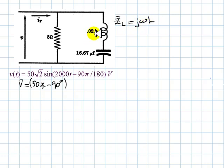L is 20 mH, but who is omega? Omega is given by the source: 2000 radians per second. 2000 radians per second multiplied by L, 0.02. That impedance is j 40 ohms.